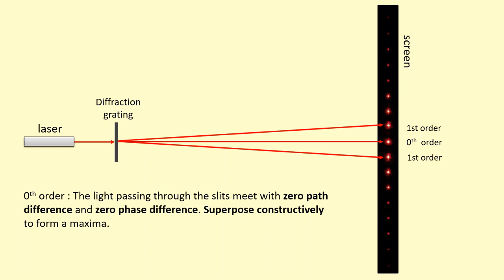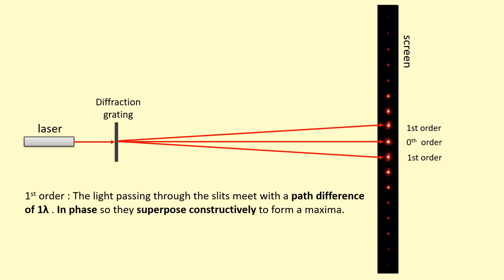And that is formed when the light passing through the different slits all have a path difference of one wavelength between each other. So it means that they're still in phase and they superpose constructively to make a maximum. Then we've got the second order and so on.